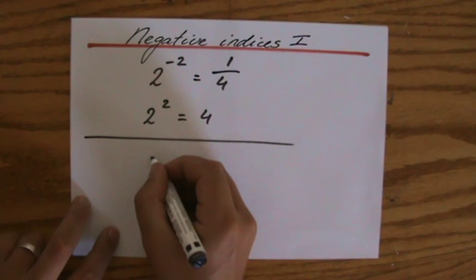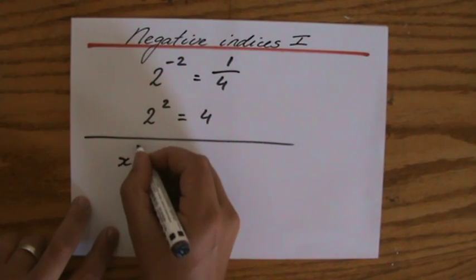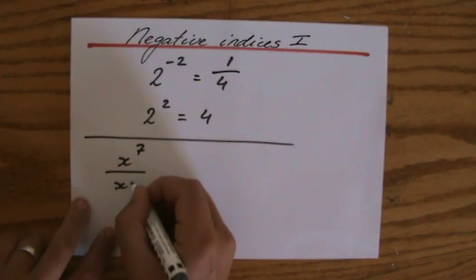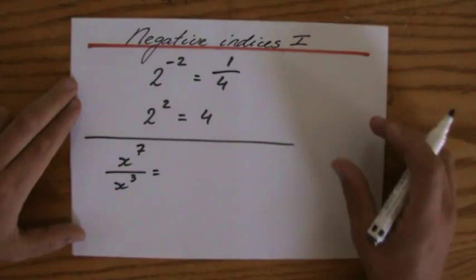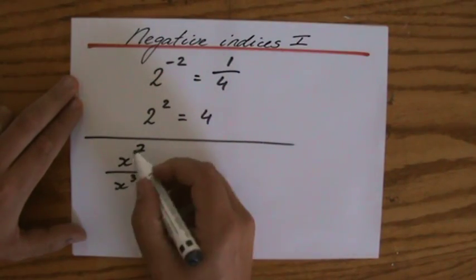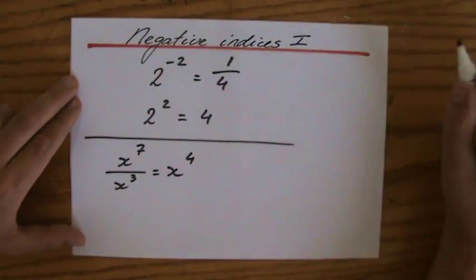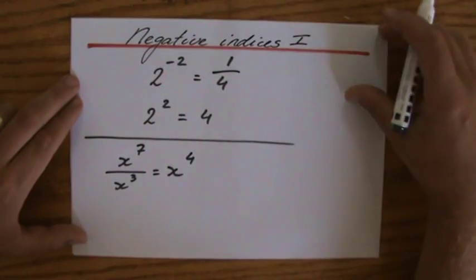Let's for instance do x to the power 7 over x to the power 3. Second law of indices: the base is the same, you subtract the indices, 7 minus 3. The answer is x to the power 4. I hope you agree with me so far.